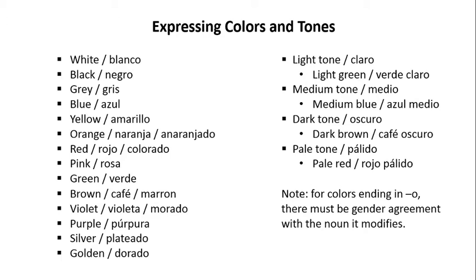White is blanco. Black is negro. Gray is gris. Blue is azul. Yellow is amarillo. Orange is naranja or anaranjado. Red is rojo or colorado. Pink is rosa. Green is verde. Brown is café or marrón. Violet is violeta or morado. Purple is púrpura.